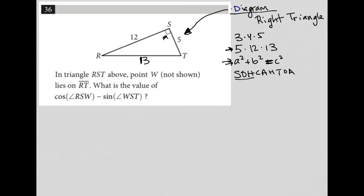which is sine equals opposite over hypotenuse, cosine equals adjacent over hypotenuse, and the tangent of an angle is equal to the ratio of the opposite to the adjacent side.